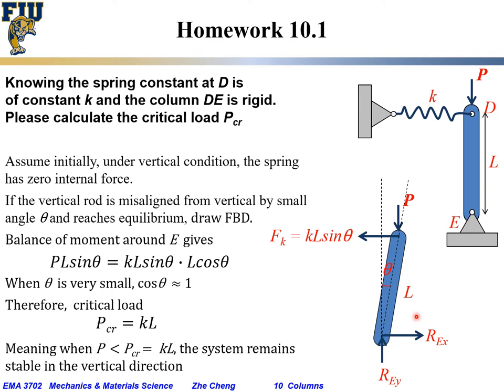With this free body diagram, let's consider the balance of moments around point E. REX and REY are not considered because both forces pass through point E. Then we have P going downward, trying to rotate the rod clockwise, and the moment arm distance would be L times sine theta. This gives the clockwise moment. At point D, the horizontal force KL sine theta tries to rotate the rod counterclockwise.